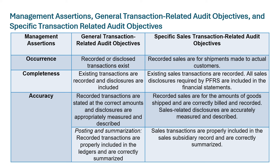In contrast, a specific sales transaction-related audit objective for occurrence would be: recorded sales are for shipments made to actual customers. This is a perfect example of a specific audit objective — you can only use it for sales, not for purchases or consumption of utilities.